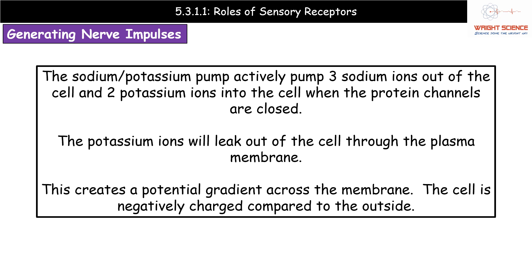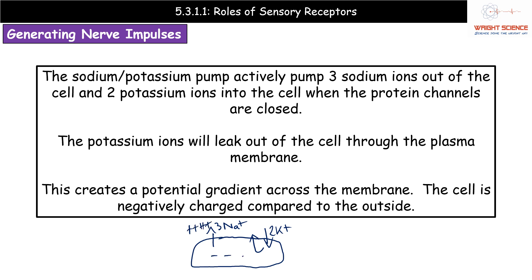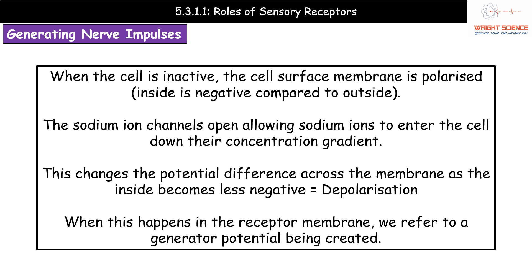This creates a potential gradient across the cell membrane. The cell itself becomes negatively charged compared to the outside, because we're moving a greater number of positive charges out — three sodium out and only two potassium in, which also leak back out. So we end up with a very positive environment outside and a more negative inside. When the cell is inactive, the cell surface membrane is polarised: the inside is negative compared to the outside.